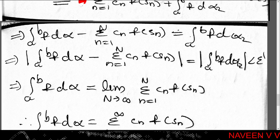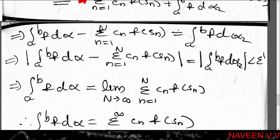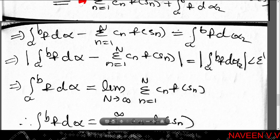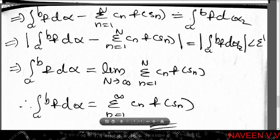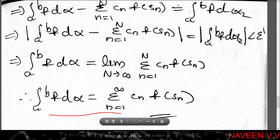So |∫(a to b) f dα - Σ(n=1 to N) cₙ · f(sₙ)| < ε, and this is true for every ε > 0. That is, for any arbitrary positive real number ε, |∫(a to b) f dα - Σ(n=1 to N) cₙ · f(sₙ)| < ε. This means the series Σ(n=1 to N) cₙ · f(sₙ) converges to ∫(a to b) f dα, so ∫(a to b) f dα = lim(N→∞) Σ(n=1 to N) cₙ · f(sₙ) = Σ(n=1 to ∞) cₙ · f(sₙ). Thus ∫(a to b) f dα = Σ(n=1 to ∞) cₙ · f(sₙ).